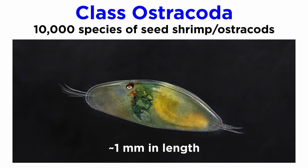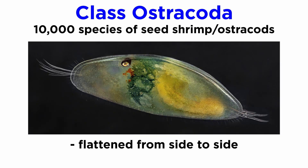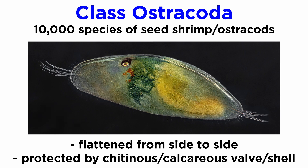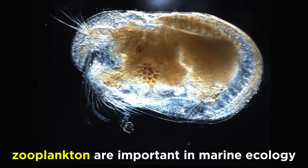Ostracods are extremely small — most are about one millimeter long, though the smallest grow to only 0.2 millimeters. The largest, like Gigantocypris, can grow up to 30 millimeters in length. They are flattened from side to side and protected by a bivalve-like chitinous or calcareous valve, or shell, where they often keep their legs and swim using their antennae.